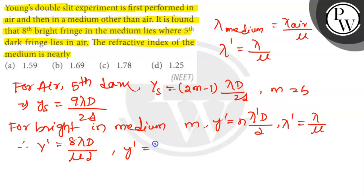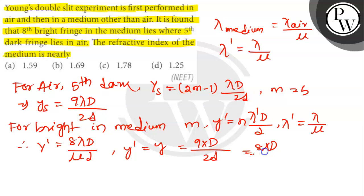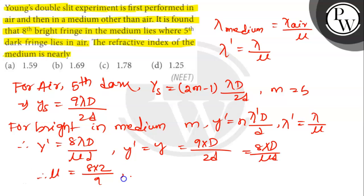Setting y_dash equal to y: 9 * lambda * D / 2d = 8 * lambda * D / (mu * d). Solving, mu = 8 * 2 / 9 = 1.78. So option C is the correct answer.